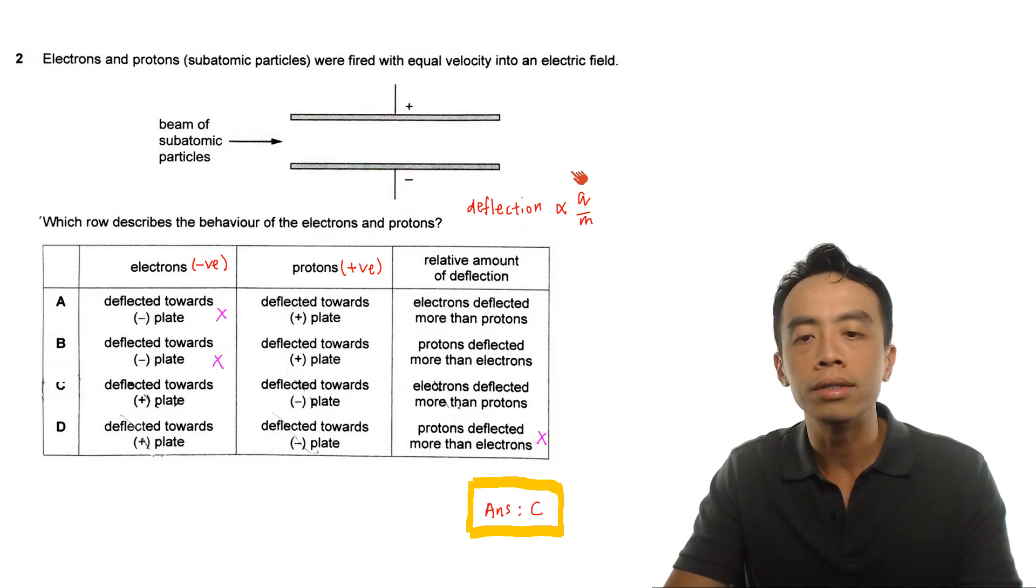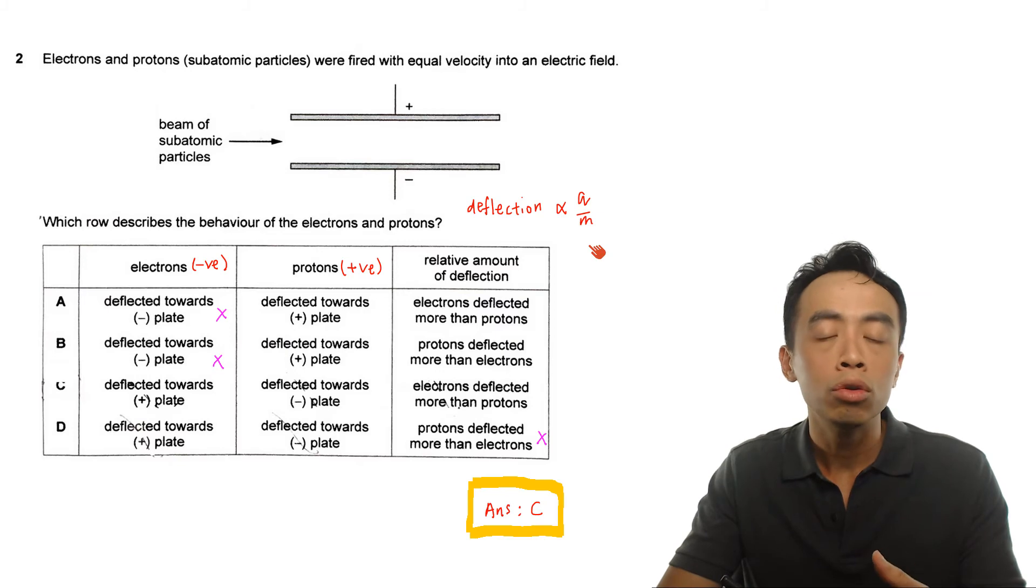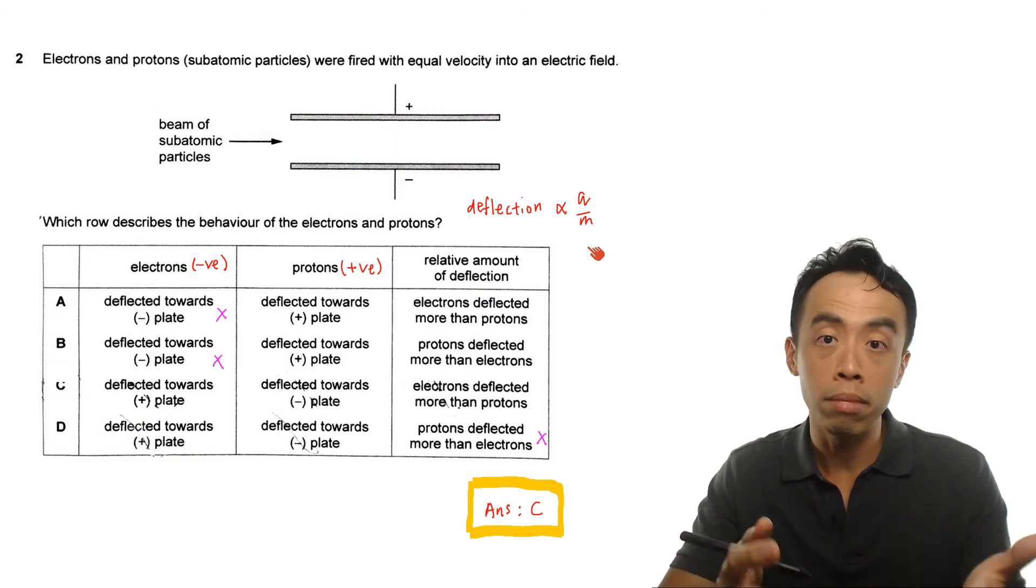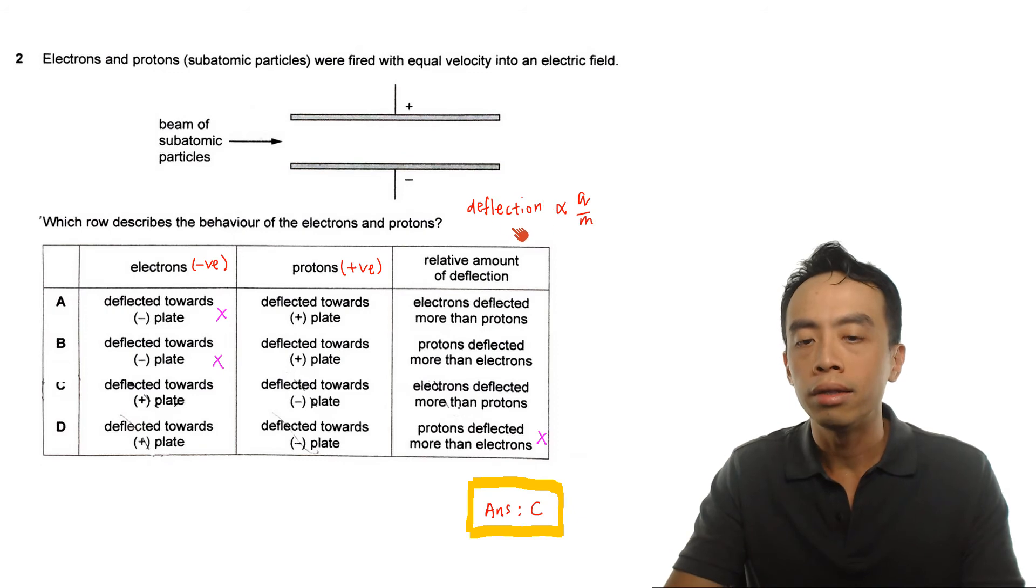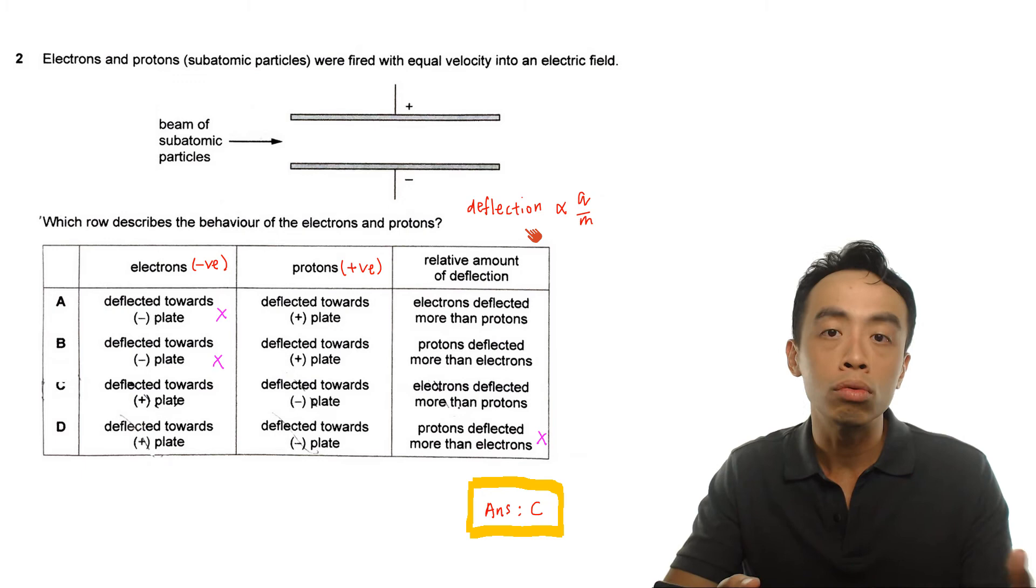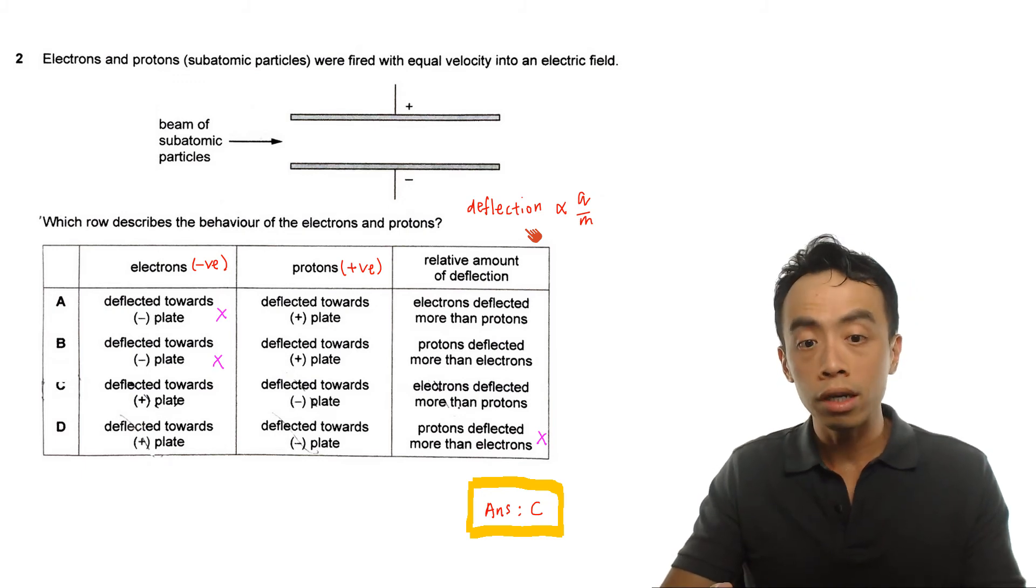Angle of deflection is directly related to charge to mass ratio for us to deduce comparing electrons and protons which one will be deflected to a greater extent. Now I think it is also good to keep in mind this expression is also useful for calculation if you have two charged particles deflected in an electric field. If we know the charge and the mass of these two charged particles we can actually calculate the angle of deflection or we can compare the extent of deflection of these two charged particles. Of course in this case we don't really need them.